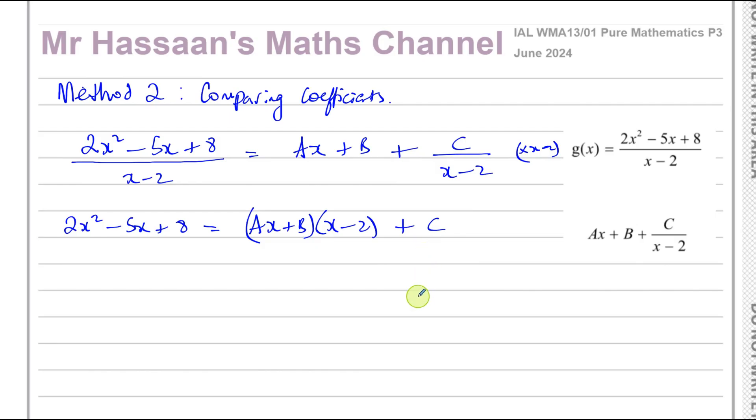Now what we can do is compare the coefficients. If you want to, you can expand this, but if it's a bit more complicated, it's not really wise to expand it. You can just expand it in your brain almost. So you've got 2x squared minus 5x plus 8 and this is identical to this side. We can see the coefficients of x squared. On this side, we have 2. On this side, the only x squared term you're going to get is when you multiply these two terms together. You have Ax times x, which is Ax squared. So straight away, we can say A is equal to 2.